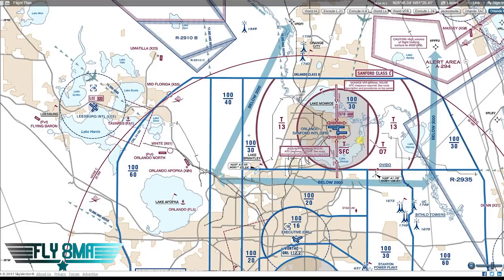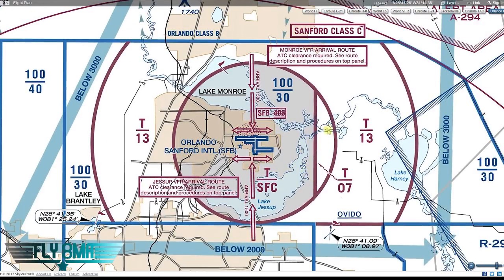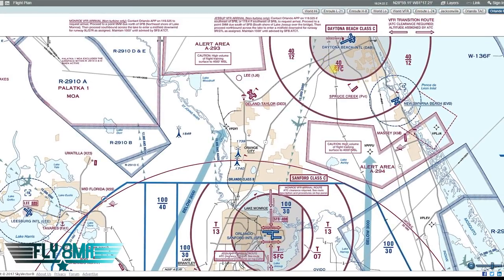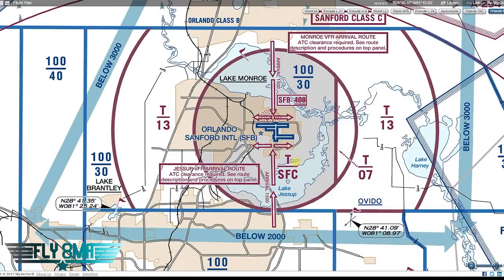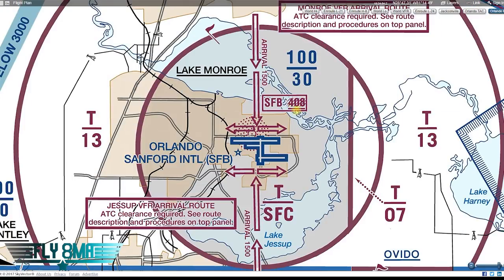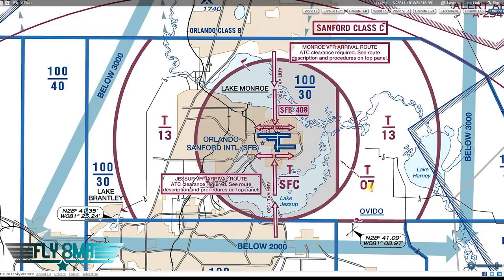A few trivia questions: around Daytona, airspace typically goes from the surface to 1,200 feet to 4,000 MSL — but here it goes from the surface to 'T,' or 700 feet MSL to 'T.' What does 'T' mean? That's a great question for private and commercial pilot oral exams. The answer: 'T' means that airspace goes from 700 feet up to the overlying terminal airspace of 3,000 feet — the Bravo airspace.